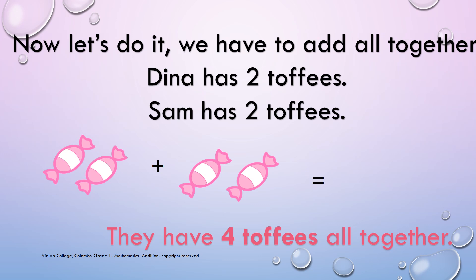Here is our next example. Let's do it. We have to add them all together. Dina has 2 toffees. Sam has 2 toffees. We have to add all the toffees together. They have 4 toffees altogether.